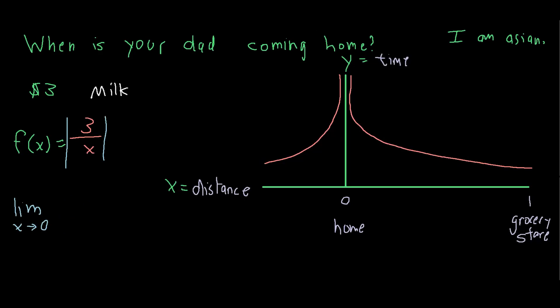Actually, let's switch to a different color here. Basically, as the x value approaches 0, what value does the y value approach? As you can see on our graph, the y value, or time it takes until your dad gets home, approaches infinity.